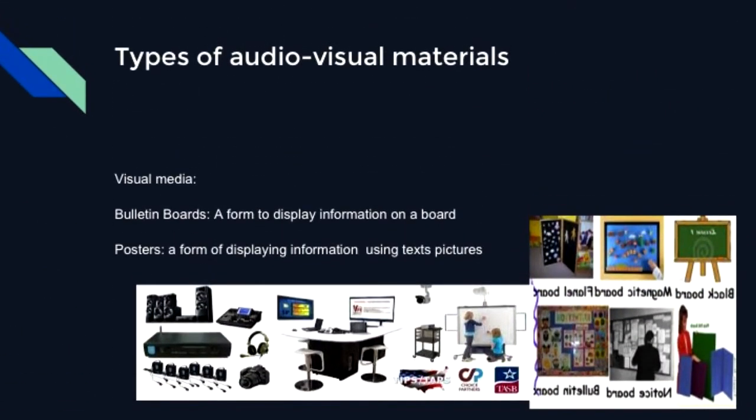Visual material refers to tools to convey information through sight. It encompasses a wide range of forms, including photographs, cinema, video films, videotapes, paintings, drawings, cartoons, and three-dimensional art such as sculpture and architecture. Some can be categorized as fine art.